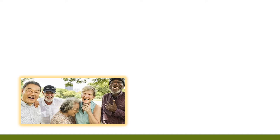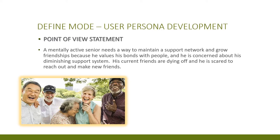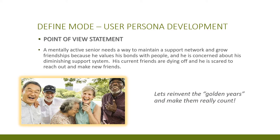Our last juncture in the define phase was to develop a point of view, or POV — essentially the next step towards an actionable problem statement. We created the POV built around a composite persona, uncovering core needs and surprising insights, and developed a definitive POV statement: a mentally active senior needs a way to maintain a support network and grow friendships because he values his bonds with people and is concerned about his diminishing support system — his current friends are dying off and he's scared to reach out and make new friends. This POV was instrumental in identifying key issues and is the internal epicenter of the design thinking solution process.